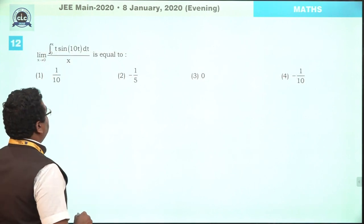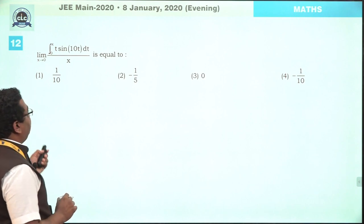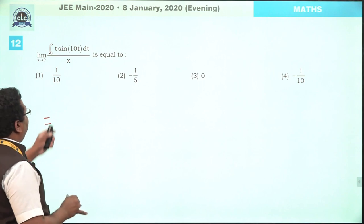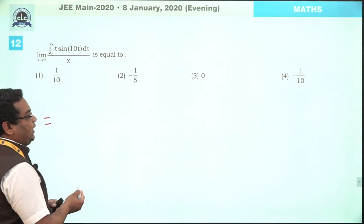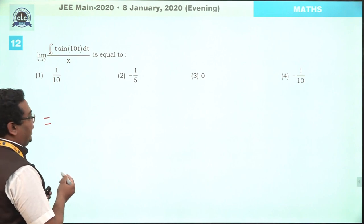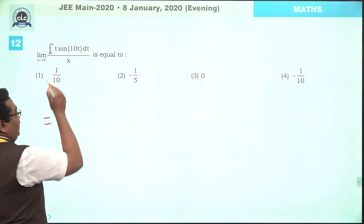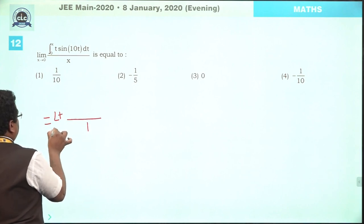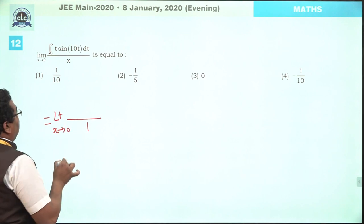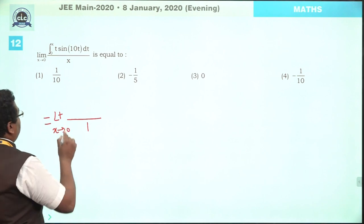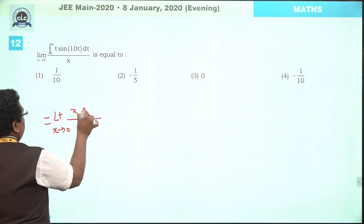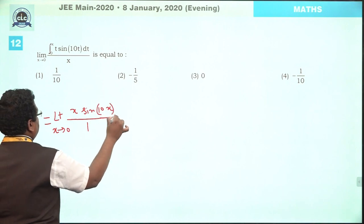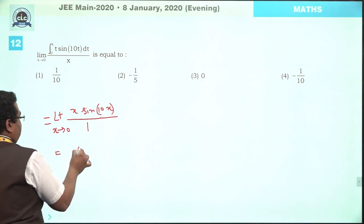Question number 12. A very simple limit question solved using L'Hôpital's rule. Since it is a 0/0 format, we differentiate numerator and denominator. In the denominator the derivative is 1; for the numerator we apply Leibniz rule, giving x times sin(10x). This limit is clearly observed to be 0.